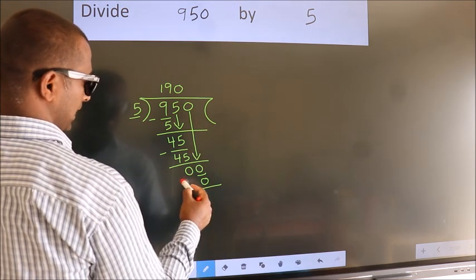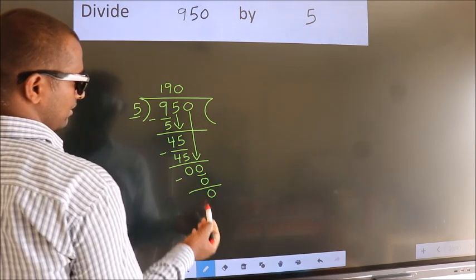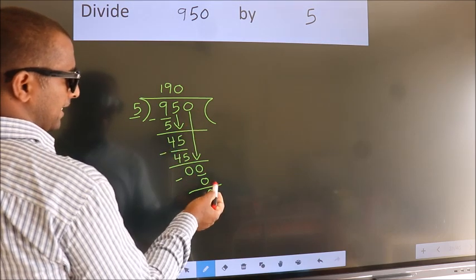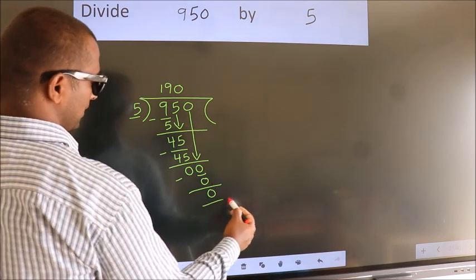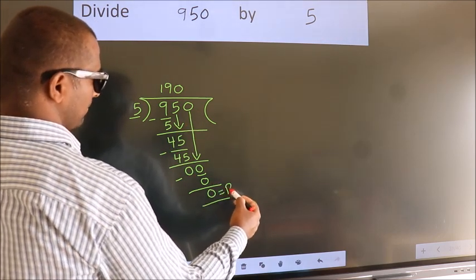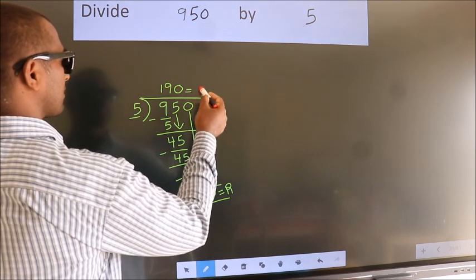Now, we subtract. We get 0. No more numbers to bring down. So, we stop here. This is our remainder. This is our quotient.